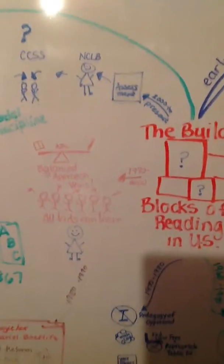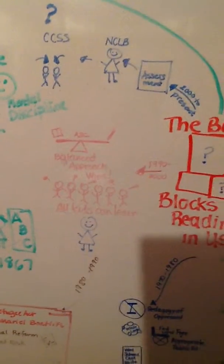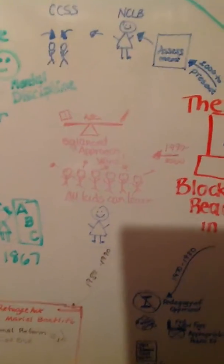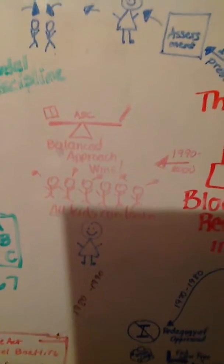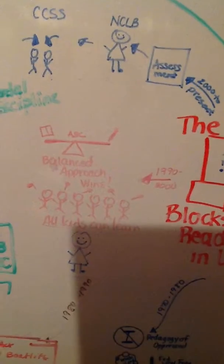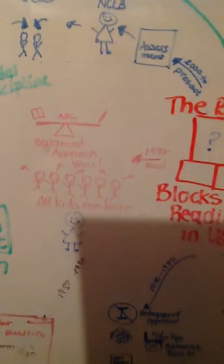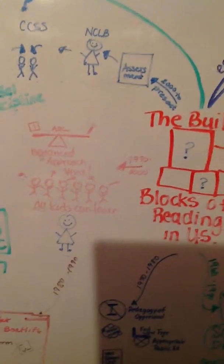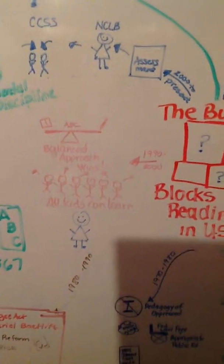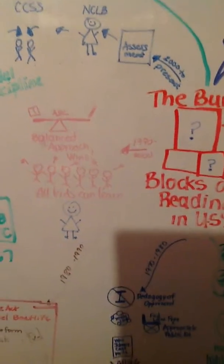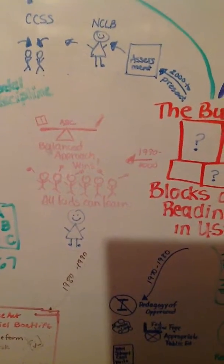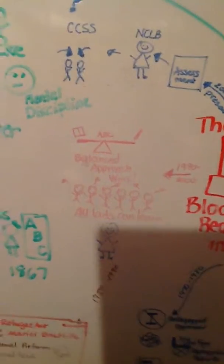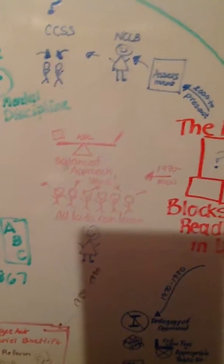This brings us to the 1990s. This is when pretty much Cunningham wins the war on the balanced approach, which is why I have my little balance beam. She wins because there's all different ways that kids can learn, so we need to hit all of those ways. We also have Adams' book, Beginning to Read, Thinking and Learning About Print. It brings back the phonological awareness, which also we needed in the balanced literacy.